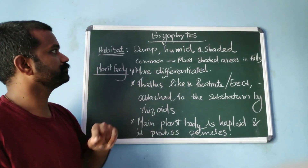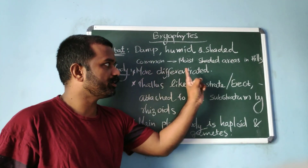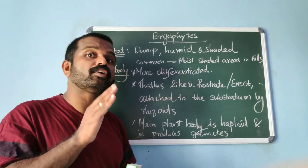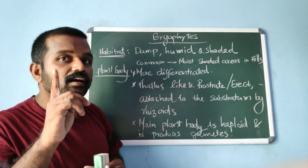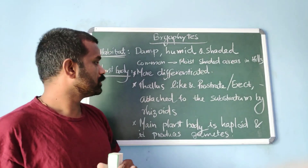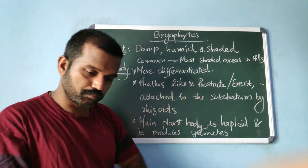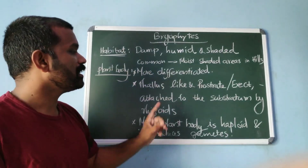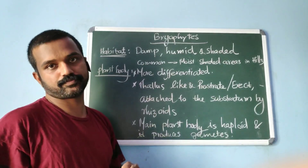The second point is about the plant body. The plant body is more differentiated than that of algae. It is thallus-like and prostrate or erect, attached to the substrate by rhizoids.